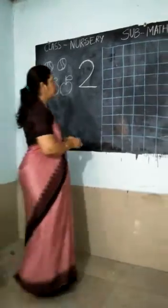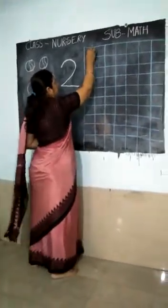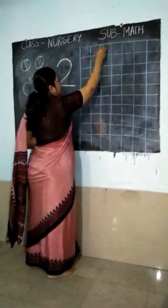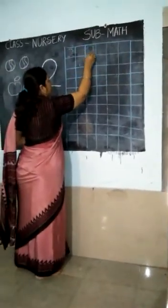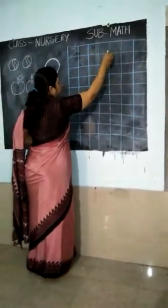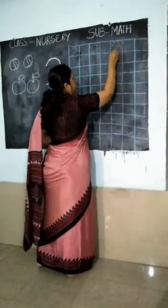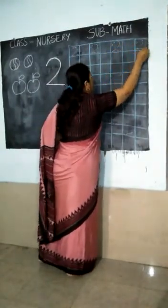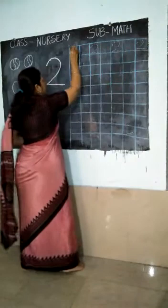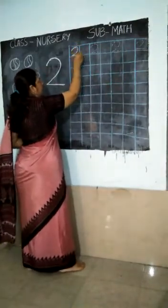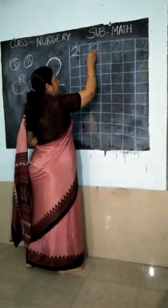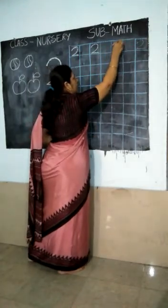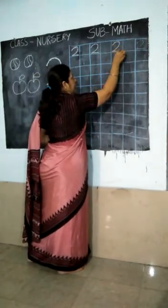Now you have to write. First in your book, press the number 2. Curve, slant, number 2. Curve, slant, number 2. Curve, slant, sleeping line.